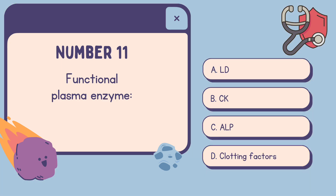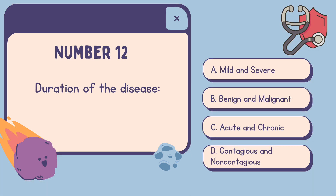Number 11: Functional plasma enzyme is — A. LD, B. CK, C. ALP, D. Clotting factors. The correct answer is D, Clotting factors.